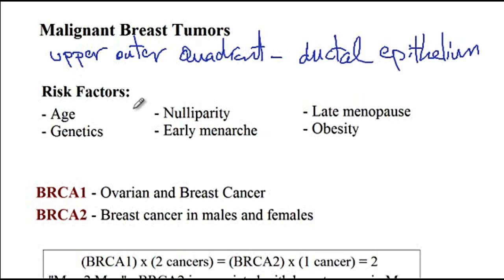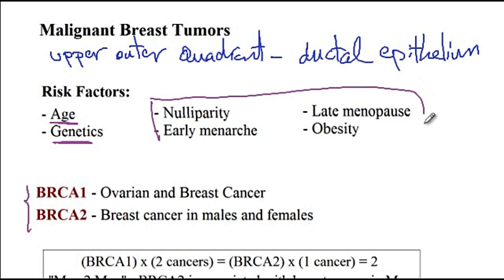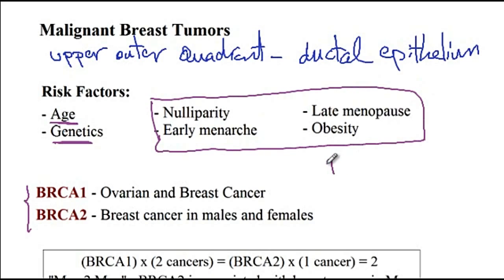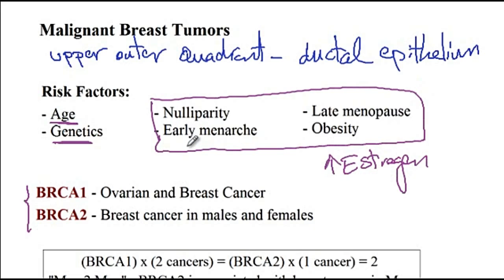Risk factors for breast cancer include age and genetics, such as mutations in BRCA1 and BRCA2 genes. Other risk factors include nulliparity, late menopause, early menarche, and obesity — all of which increase estrogen levels over a lifetime, thus increasing the risk of breast cancer.